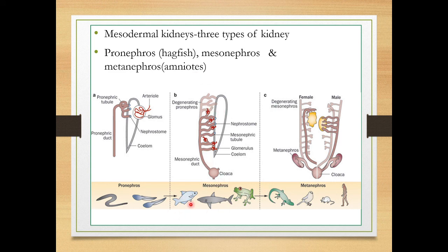The pronephros is found in primitive forms, and the mesonephros is found in fishes, sharks, and amphibians. The metanephros is present at the lower part of the abdomen on either side of the vertebral column, found in the most developed animals. So there are three types of kidney present in Vertebrata: metanephros, mesonephros, and pronephros.